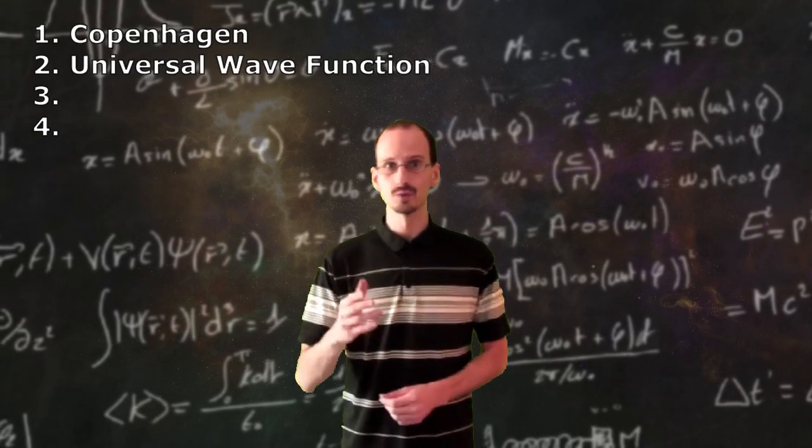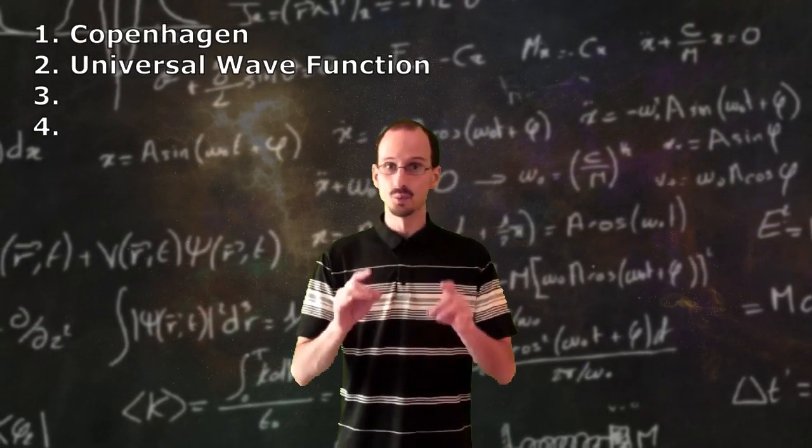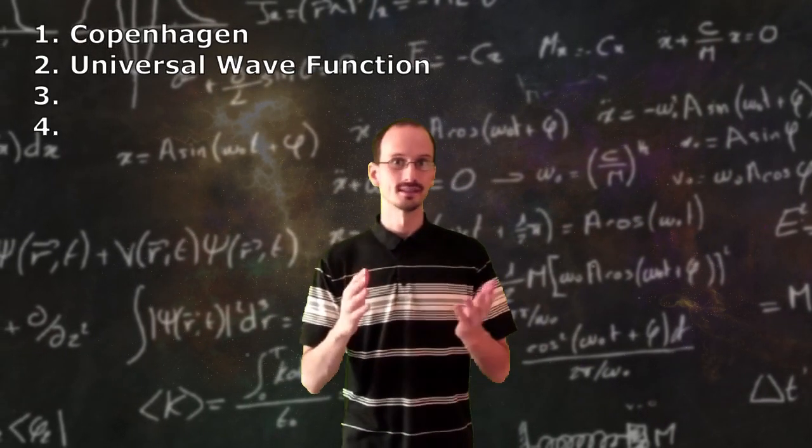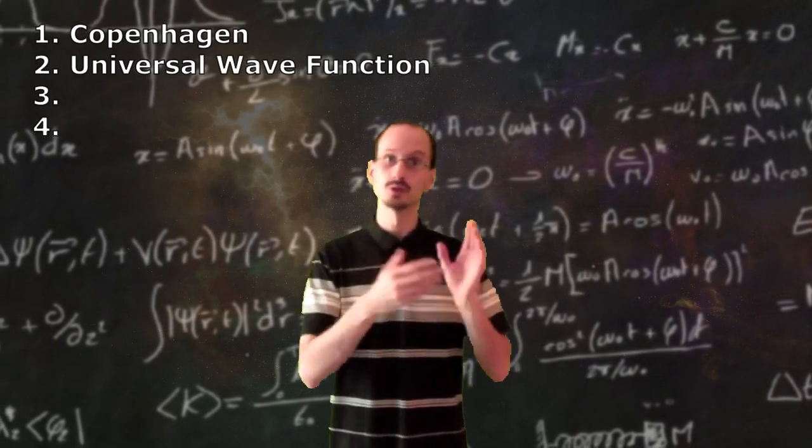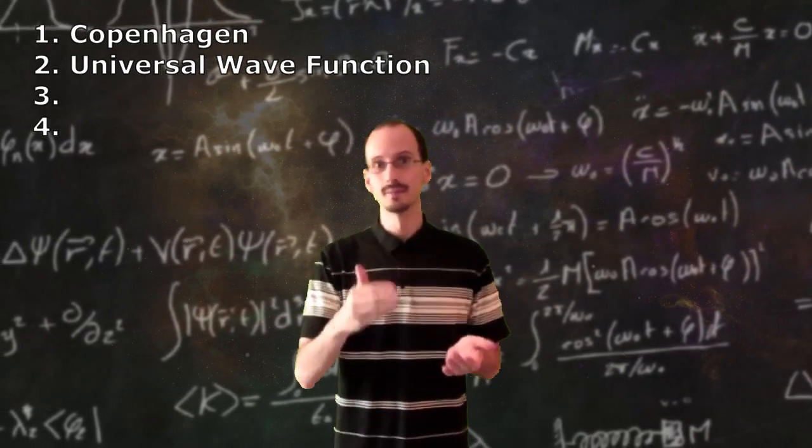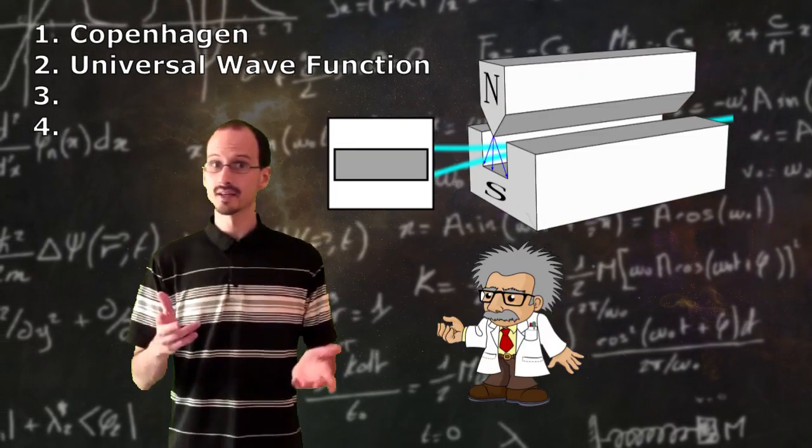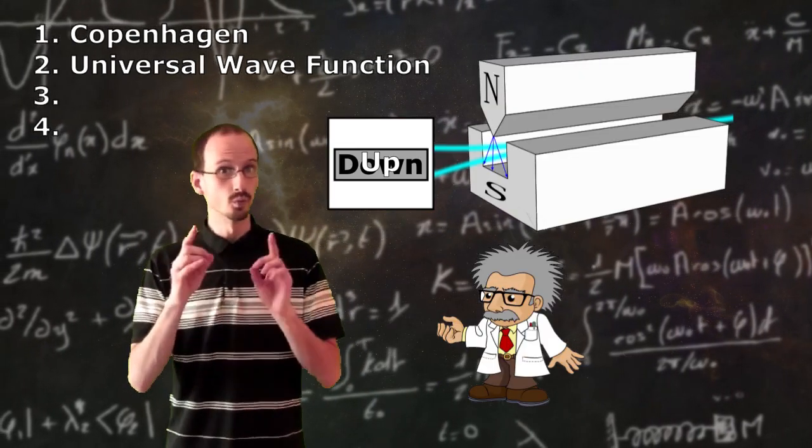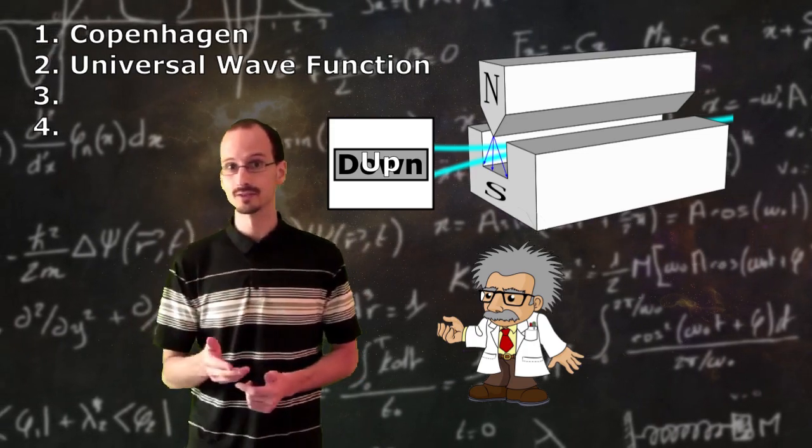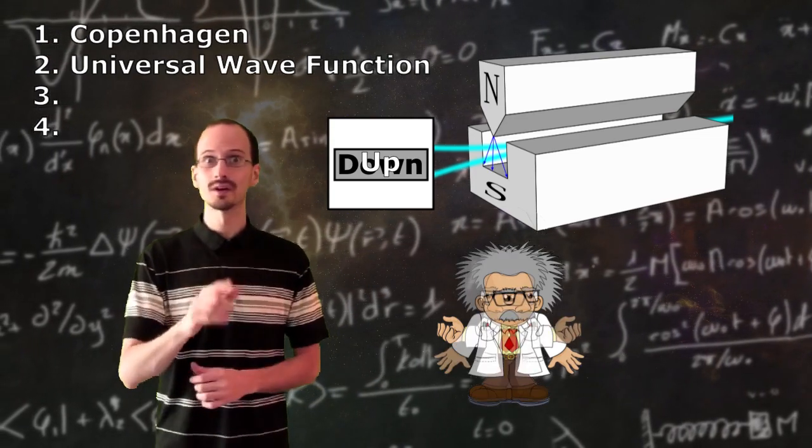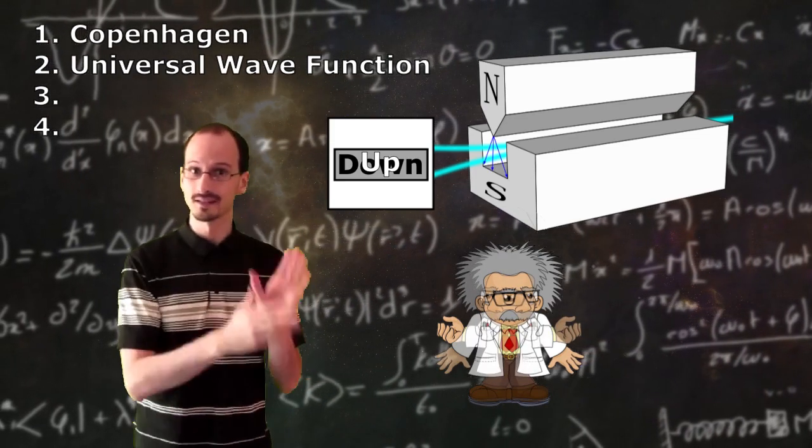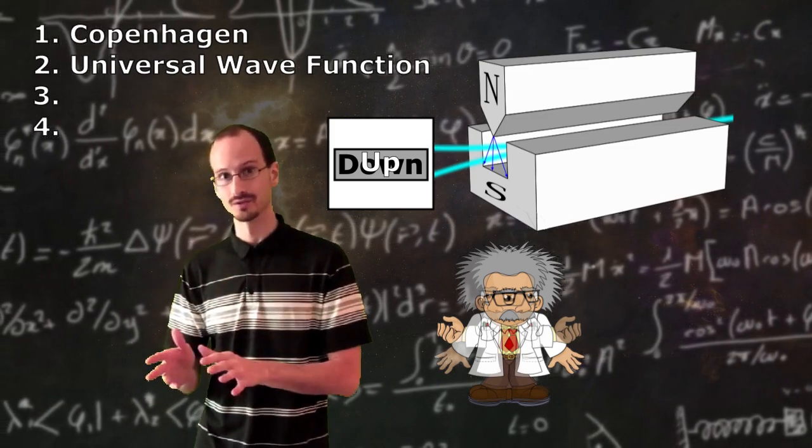The other main contender is the universal wave function. It says, what if every interaction causes entanglement, whether it's between two particles, or a particle, a measuring device, a scientist, and the rest of the universe? If that were the case, then the measuring device would show a superposition of results, and the scientist would be put in a superposition of seeing this result versus that result.